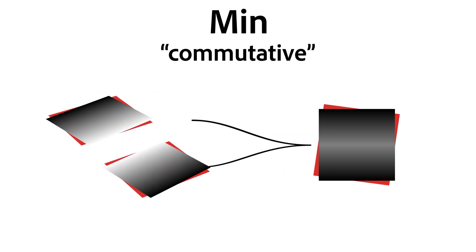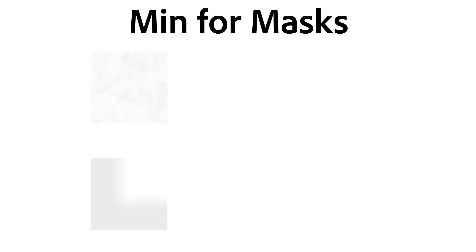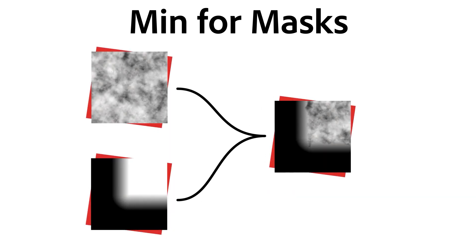Min is also commutative, making it even easier to use. In masks, Min looks very similar to Multiply, as it can also combine two masks in a simple way.